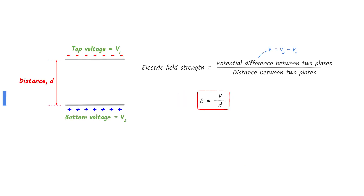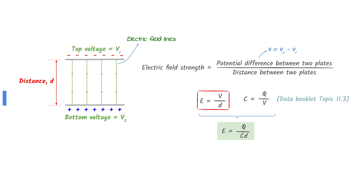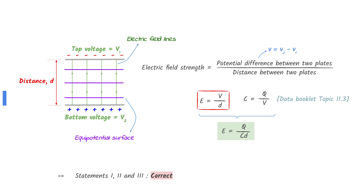The electric field strength between two plates can be found by dividing the potential difference between the plates by the distance between the plates. Note that this equation is not given in the data booklet. Combining this with the charge equation from the data booklet gives the combined equation shown in statement 1, which means statement 1 is correct. Electric field lines are at right angles to the plates, making statement 2 correct. And lastly, the equipotential surfaces are parallel to the plates, making statement 3 correct.